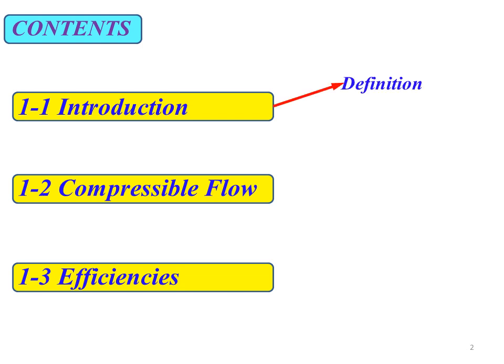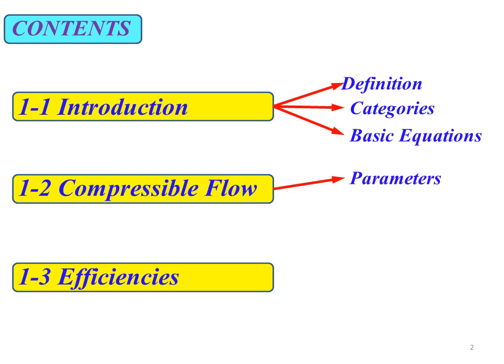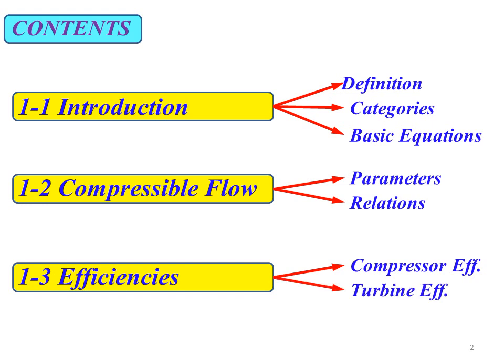For the first subtopic, we will learn about the definition of a turbo machine, the categories, and also the basic equations involved. For the second subtopic, we will learn about the parameters involved in the calculation of compressible flow and the equations related to it. For the last subtopic, we will learn about the equation for compressor efficiency and turbine efficiency to determine the performance of a turbo machine.